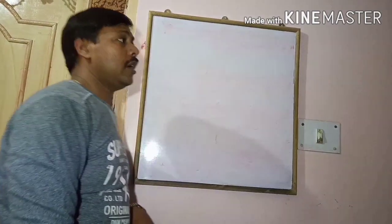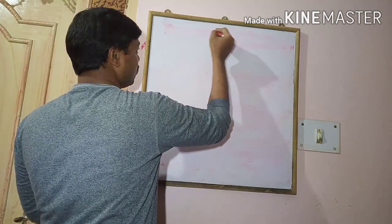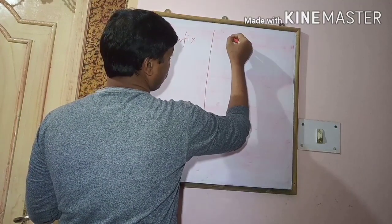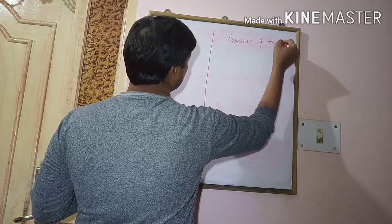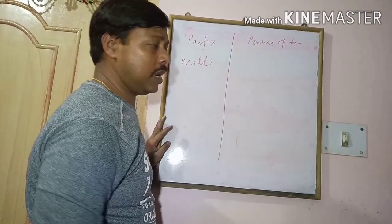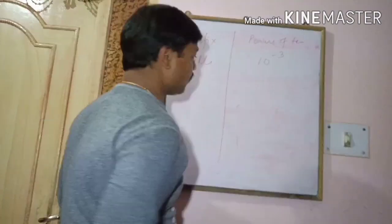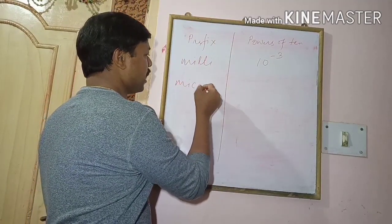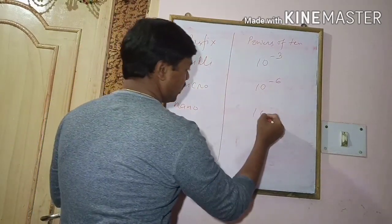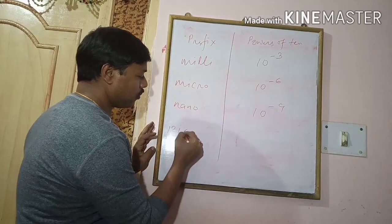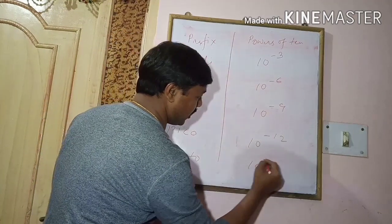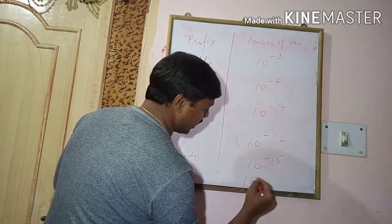To measure physical quantities that are bigger or smaller in amount, we use prefixes. For smaller quantities: milli stands for 10 to the power minus 3, micro for 10 to the power minus 6, nano for 10 to the power minus 9, pico for 10 to the power minus 12, femto for 10 to the power minus 15, and atto for 10 to the power minus 18.